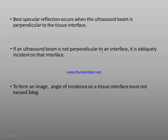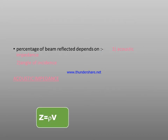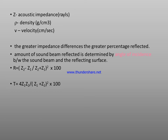Best specular reflection occurs when the ultrasound beam is perpendicular to a tissue interface. If the beam is not perpendicular, it is obliquely incident on that interface. To form an image, the angle of incidence on a tissue interface must not exceed 3 degrees. The percentage of the beam reflected depends on acoustic impedance and angle of incidence. Acoustic impedance Z equals rho times V, where rho is density and V is velocity. The greater the impedance difference, the greater the percentage of the beam reflected.